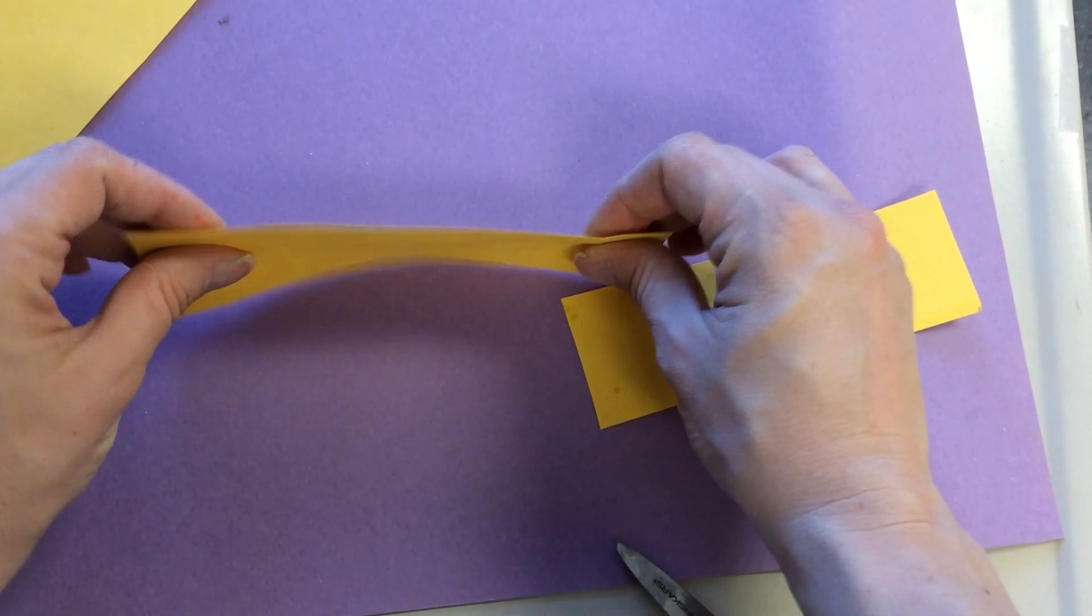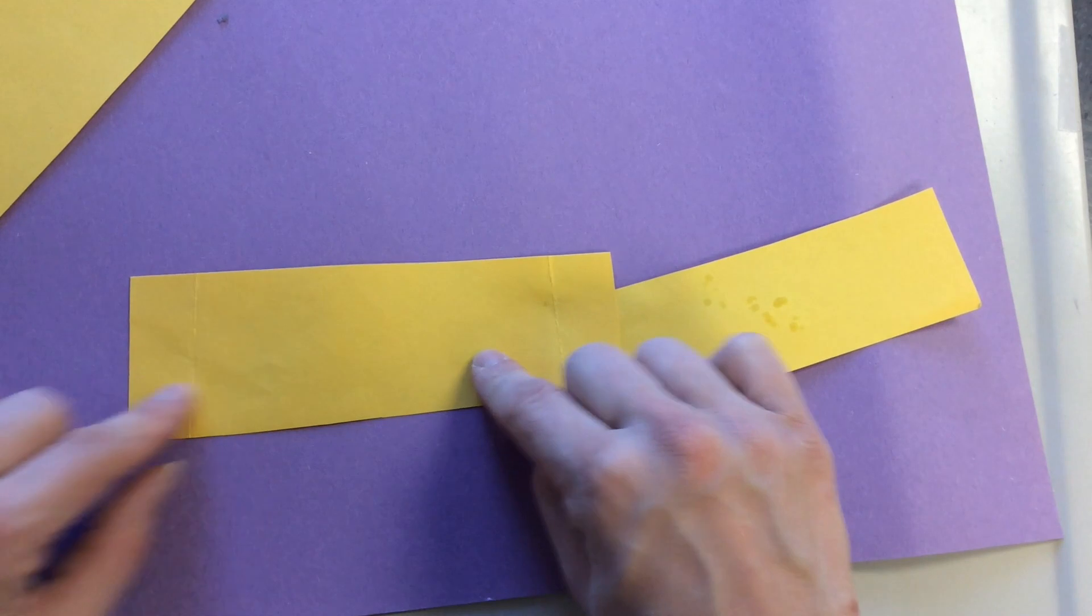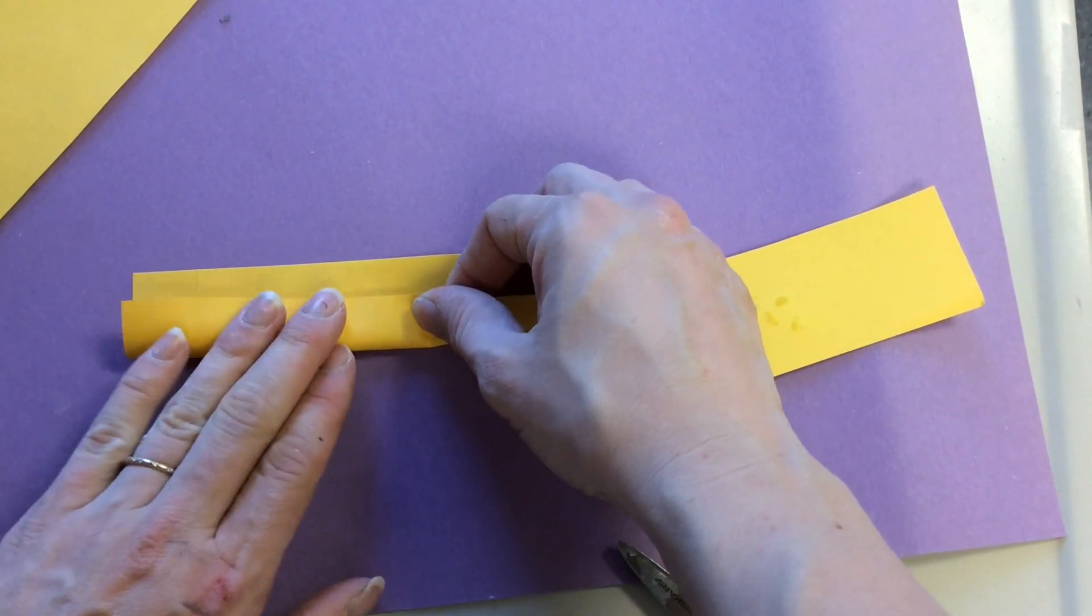If I want my paper to stand like this, my tab needs to go along the edge. It should be about as thick as my finger.